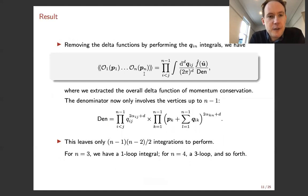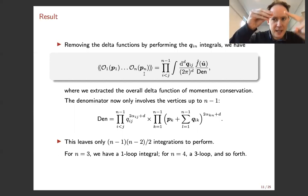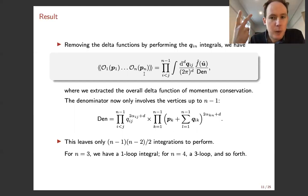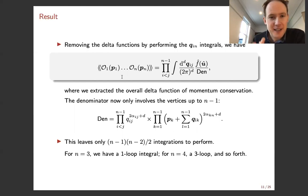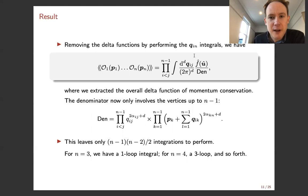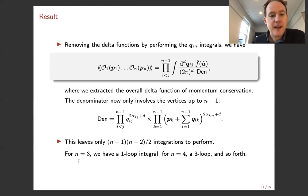Moving on: we've got n delta functions enforcing momentum conservation at each vertex, so we can integrate over a subset of momenta to remove them. We pick the nth vertex, integrate over all momenta running into it, and what's left is a single overall delta function for momentum conservation, which we pull out. That leaves a reduced correlator written with double brackets. After removing the overall delta function of momentum conservation, we have this reduced simplex integral — the same as before except the denominator only runs over vertices one up to n-1. This leaves n-1 choose 2 integrations: for n=3 that's a one-loop integral, for n=4 that's a three-loop integral.